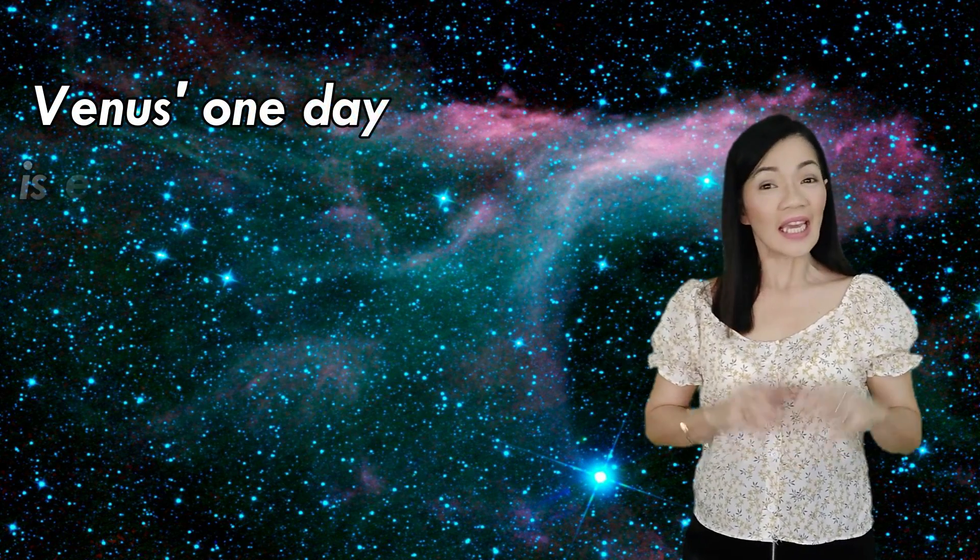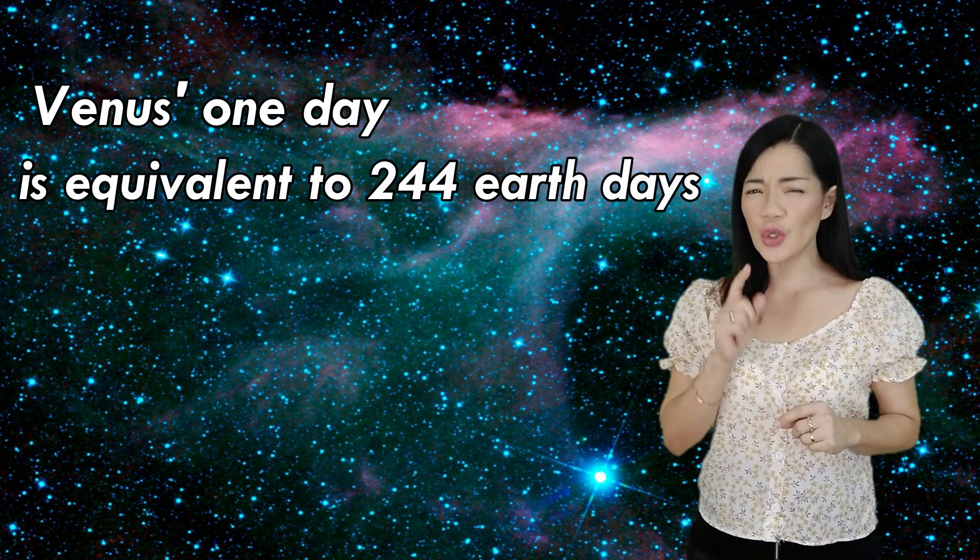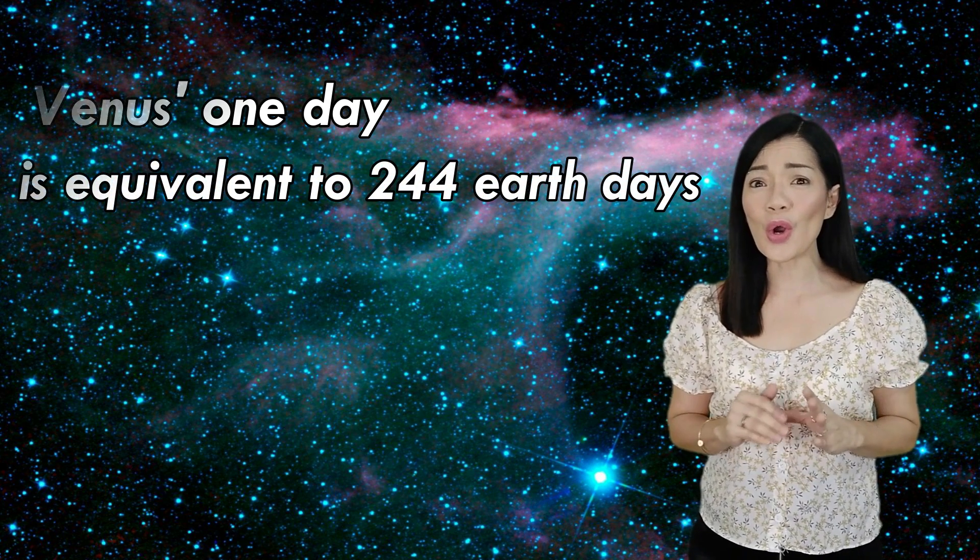People call Venus as a morning and evening star because they can be seen in the morning and evening. Like Mercury, Venus also doesn't have any moons. This is a really weird fact. Venus's one day is equivalent to 244 Earth days.